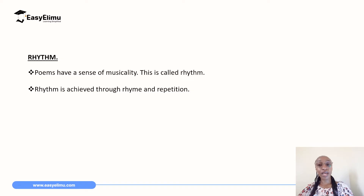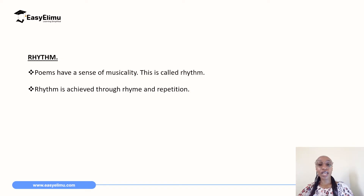Rhythm can also be achieved by rhyme. When you read a poem and realize that some of the words have a similar pronunciation — the words may not be the same, but the pronunciation is the same — especially the last words of each line. Maybe the last word of every stanza is similar, or the words in all the lines share a similar rhyme. We call that the rhyme scheme, identified by looking at the pronunciation of the last words in each line. Through rhyme and repetition, we achieve the musicality of poems.